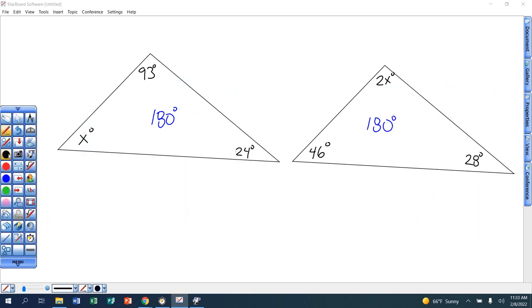So here we go. For this problem, I'm going to set it up as this x plus that 93 degree for that first angle plus that 24. That all is going to be equal to that magic 180 degree mark.